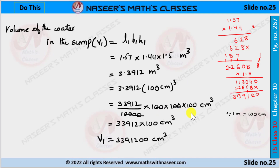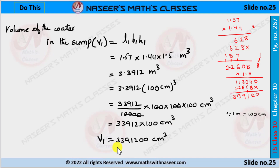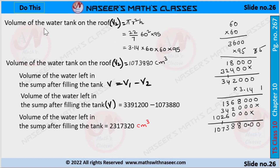Substituting one meter equal to 100 centimeters, 100 centimeters cubed is written as 100 × 100 × 100 cubic centimeters. Here 3.3912 is written as 33,912 divided by 10,000. We cancel four zeros in the denominator and four zeros in the numerator, then we write 33,912 × 100 cubic centimeters. Therefore V1 is equal to 33,91,200 cubic centimeters.